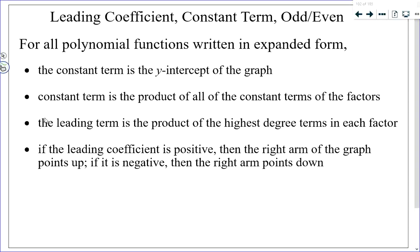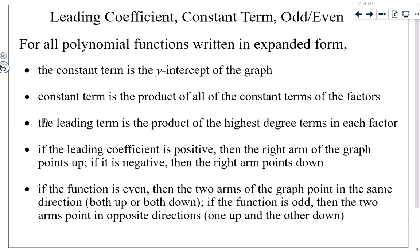If the polynomial is even — highest degree exponent is even — both arms point in the same direction, either both up or both down. If the polynomial is odd — highest degree is odd — the two arms point in opposite directions.